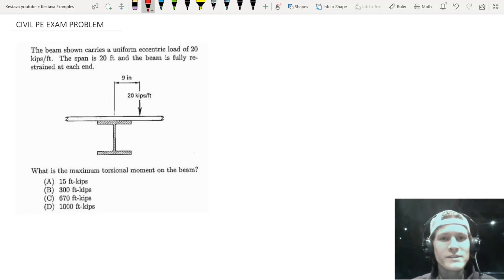The beam shown carries a uniform eccentric load of 20 kips per foot. The span is 20 feet, and the beam is fully restrained at each end. What is the maximum torsional moment on the beam? Torsional moment, that's what we're looking for. Torsion is kind of its own animal, but it is essentially a moment. It has the same units. It's a force times a length, and in this problem, it's actually a lot simpler than you might think.